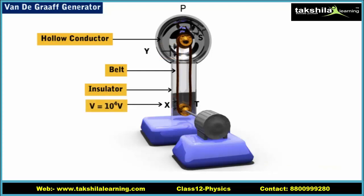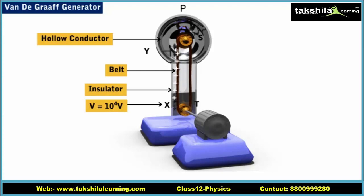The lower comb, X, is maintained at a positive potential of about 10⁴ volts by a power supply system. The upper comb, Y, is connected to the metallic sphere P. Because of the high electric field near the needles of comb X, there is corona discharge and the air near it starts conducting. The negative charges in the air move towards the positively charged needles because of attraction. The positive charges in the air move towards the belt due to repulsion and stick to the belt. The negative charges neutralize some of the positive charges on comb X.